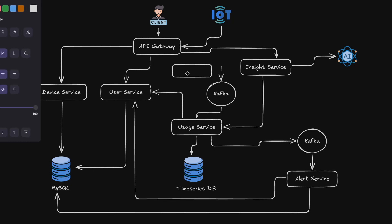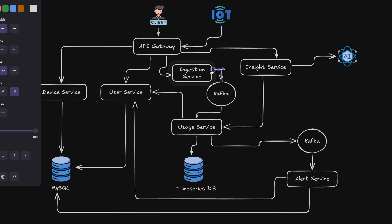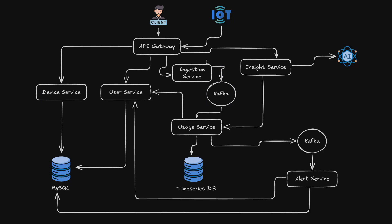The ingestion service will receive data from the API gateway and then forward it to the Kafka queue. This makes more sense given the data load. Generally speaking, the API gateway should just work as a proxy, not as a producer of messages. So to keep it lightweight, we introduce the ingestion service to produce messages for the Kafka topic, which then go to the usage service, which saves them in the time series database.